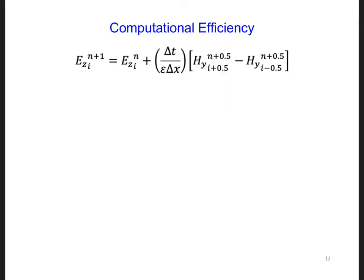Now, if we're going to be solving this equation over and over again, it's helpful if we don't repeat the exact same calculations if the answer is not going to change throughout the simulation. For example, to evaluate this equation efficiently, it helps if we don't solve for dt over epsilon delta x over and over again every time step and at all positions in space.